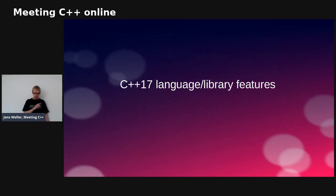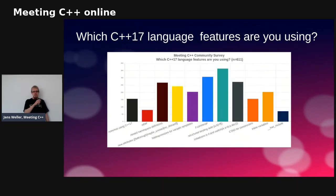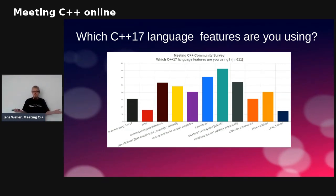Going back to the standards, you can also ask about language and library features, and this gives interesting results. For C++17 library features, std::optional is the most used feature, with std::variant, string_view, and filesystem also popular. For language features, structured bindings is the most popular C++17 feature — for most programmers it's just more useful and more often used than some other features like has_include, which is not the most popular.